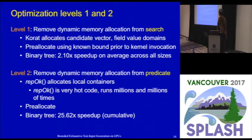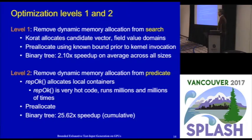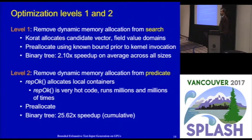The level two optimization uses a similar idea in the context of RepOK predicate executions. RepOK is hot code, executed millions of times. It needs to allocate memory for local containers. Using pre-allocation here as well gives about a 25x cumulative speedup when applied together with level one.